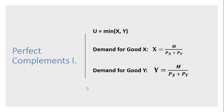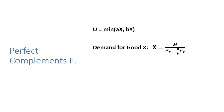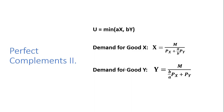Here's a second example of perfect complements. Utility is the minimum of a times x or b times y, where a and b are some values greater than zero. The demand for good x looks like this — notice in front of the price of good y term we have a divided by b. And the demand for good y looks similar, but this time in front of the price of x term we have b divided by a.